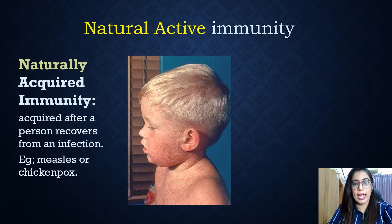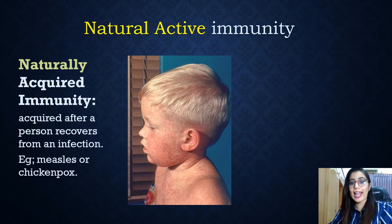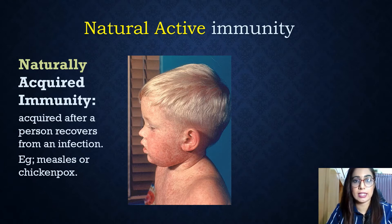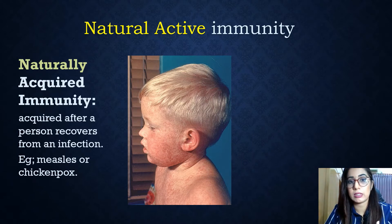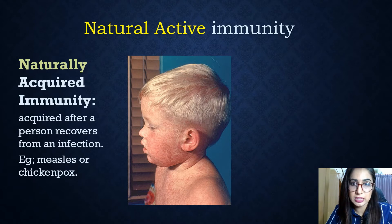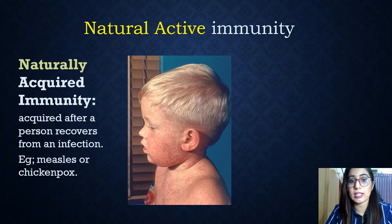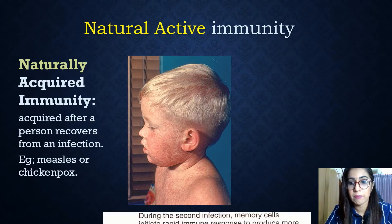Naturally acquired active immunity is acquired after a person recovers from an infection — examples include measles and chickenpox. When a person is infected by a pathogen, the lymphocytes produce antibodies in response to the antigens. When the individual recovers, they gain a permanent immunity against the disease. If attacked again by the same pathogen, the memory cells stored in the lymphocytes will rapidly produce antibodies to react immediately against those antigens.